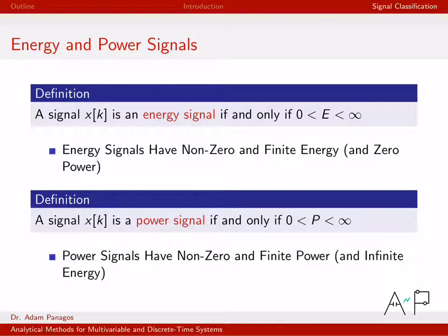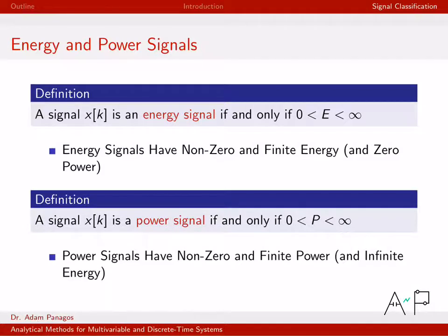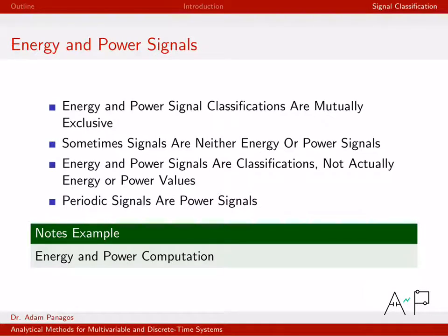Now let's talk about power. Very similar definition: we have this quantity P, which is the power of the signal — again a real-valued scalar number. We say that a signal x[k] is a power signal if and only if P is bigger than zero and less than infinity. So power signals have non-zero and finite power. It turns out that if you're an energy signal, you are a zero power signal, and if you're a power signal, you have infinite energy.